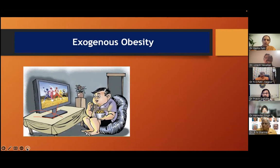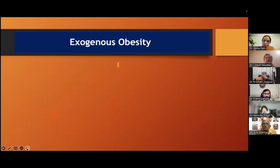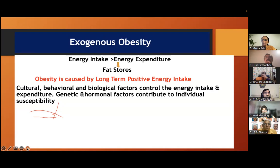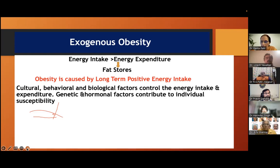In the adult there is only one growth chart, but in children and adolescents there are growth charts according to age and gender, which we should learn to follow. Exogenous obesity is what we see most often. There is an energy imbalance: energy intake is more than energy expenditure, leading to fat stores. It is caused by long-term positive energy intake and is affected by cultural, behavioral, biological factors and individual susceptibilities to genetic and hormonal factors.